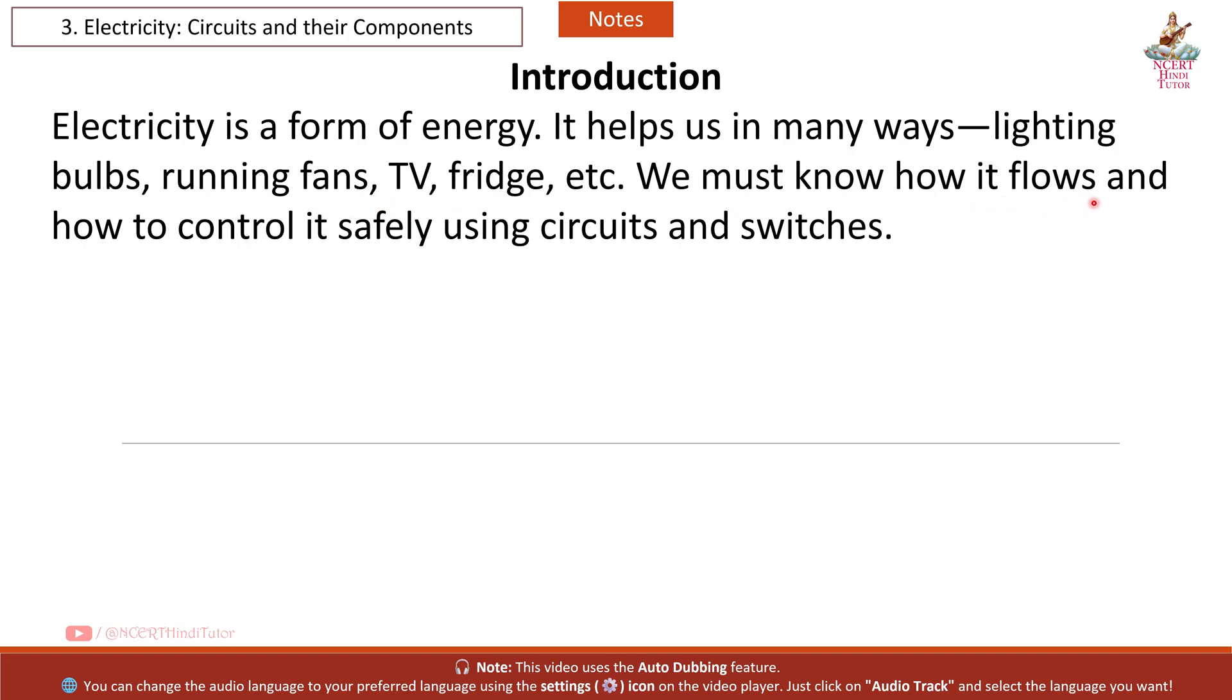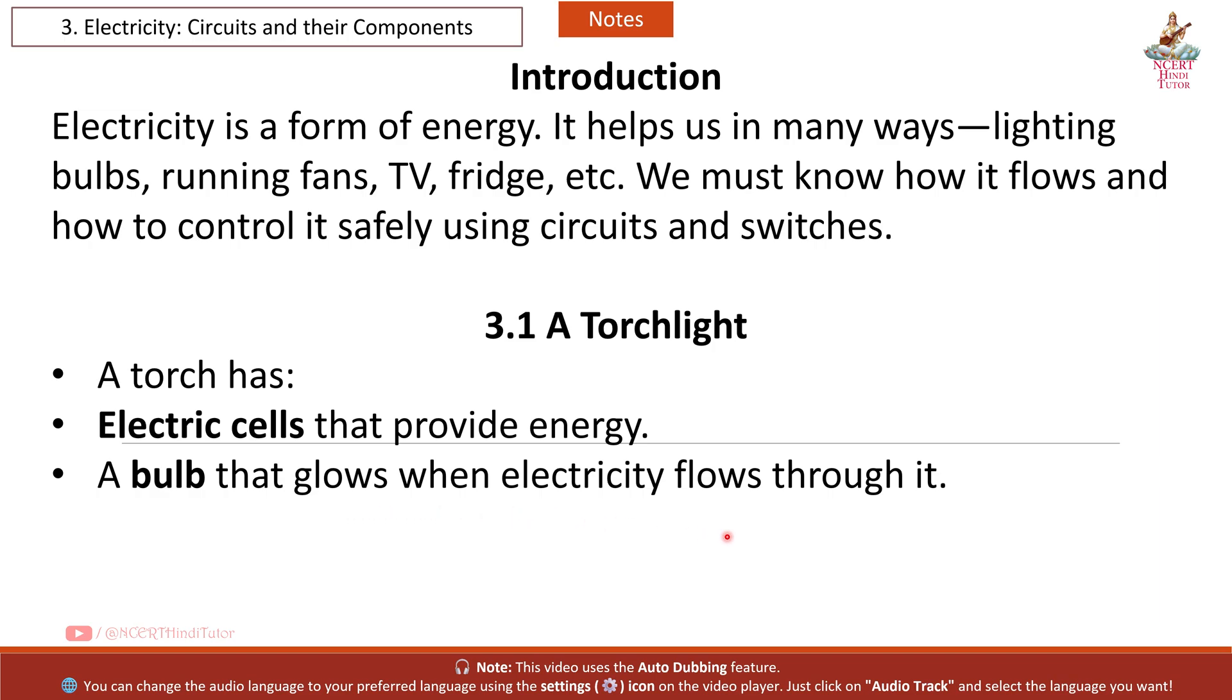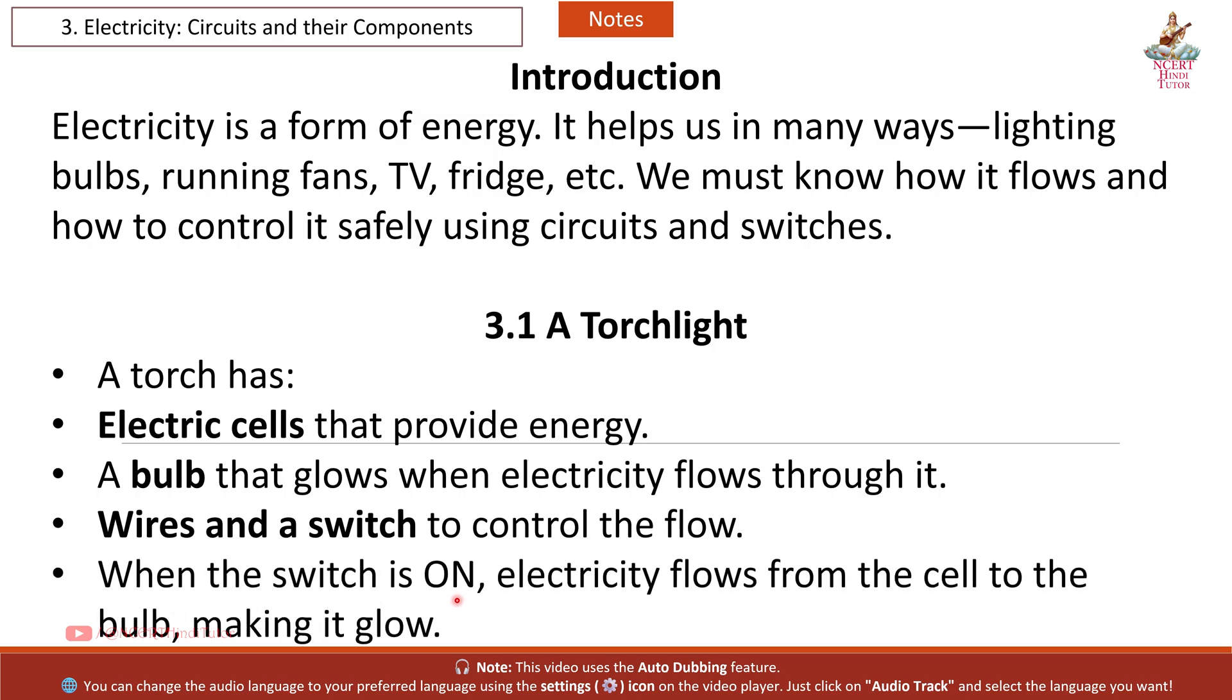We must know how it flows and how to control it safely using circuits and switches. 3.1 A Torchlight. A torch has electric cells that provide energy, a bulb that glows when electricity flows through it, wires and a switch to control the flow. When the switch is on, electricity flows from the cell to the bulb making it glow.